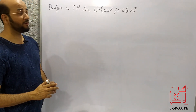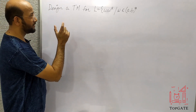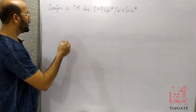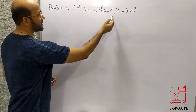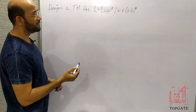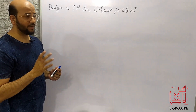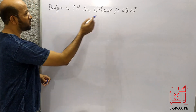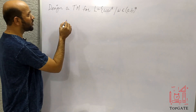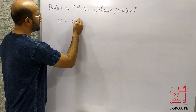Before designing this Turing machine, I will first make you understand what WW^R means and what kind of strings are possible in this language. W is a combination of A and B star — that means in W we can have any combination of A and B, including null. It is called the Kleene closure. So in W we can have, for example, A, A, B, B.